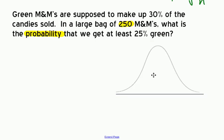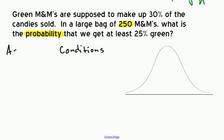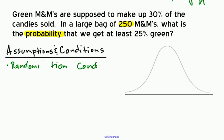Before I define the model, I need to make sure I'm actually allowed to proceed. There are assumptions and conditions that we need to check when working with a sampling distribution for proportions. The first is the randomization condition. We want to make sure that our sample represents the population.